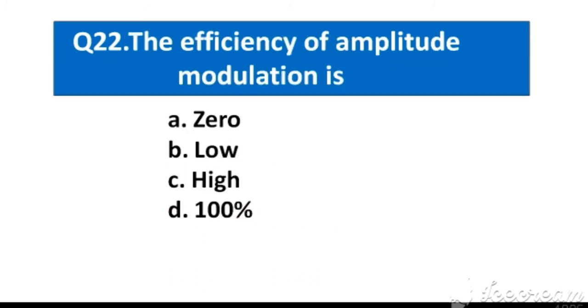Question number 22. The efficiency of amplitude modulation is option A. 0, B. Low, C. High, D. 100%.